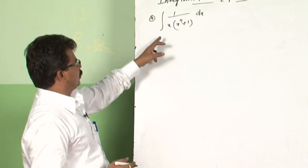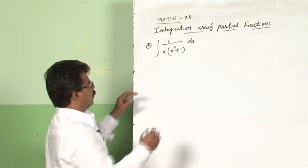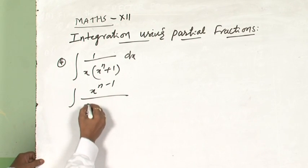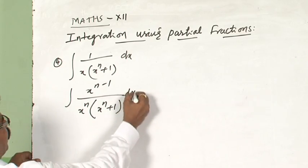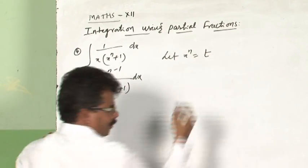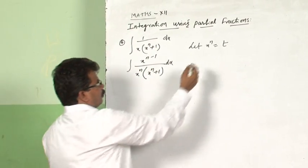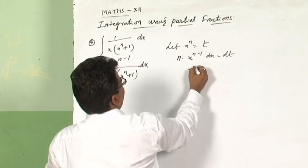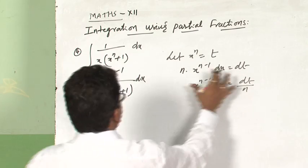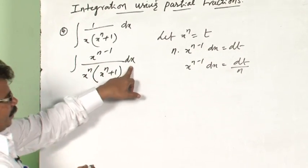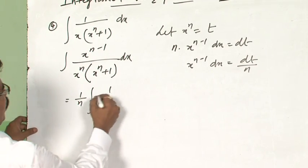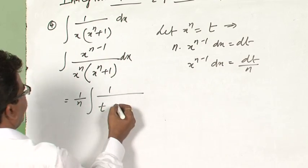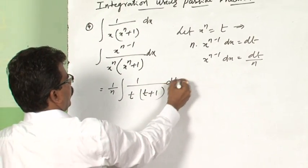Now let us discuss one more important question: integral of 1/[x(xⁿ plus 1)] dx. Here we will multiply and divide numerator and denominator by xⁿ⁻¹. So the numerator becomes xⁿ⁻¹ and the denominator becomes xⁿ(xⁿ plus 1). Now let xⁿ equal to t. Differentiating, n·xⁿ⁻¹ dx equals dt, so xⁿ⁻¹ dx equals dt/n. Substituting, this becomes (1/n) integral 1/[t(t plus 1)] dt, which can be resolved into partial fractions.